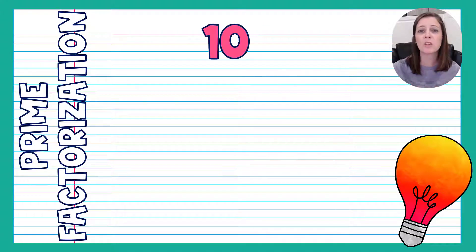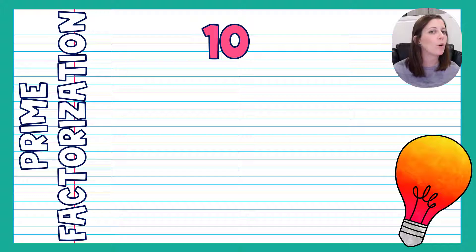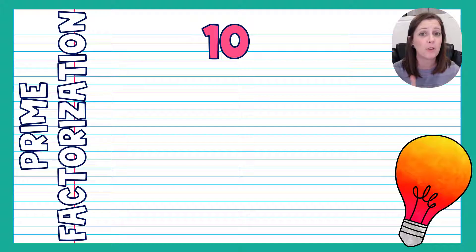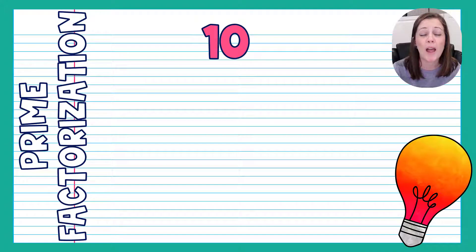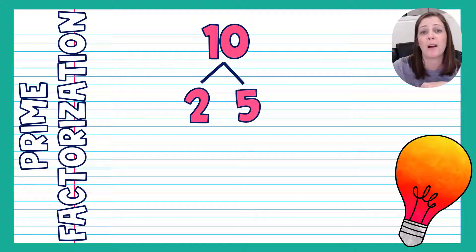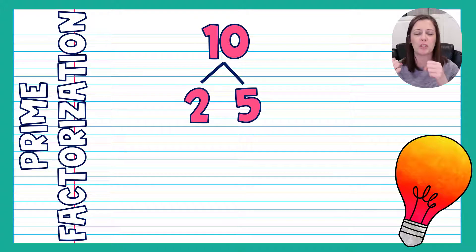We're going to start with the number 10. Ten is a composite number because there are more than two factors — more than one way we can multiply to get 10. We could do 1 times 10 or 2 times 5. Here's your first hint for prime factorization: when we do prime factorization, we never use 1 and that number, because why would we repeat ourselves? So instead of 1 times 10, I'm going to break 10 down into 2 times 5, giving us two branches.